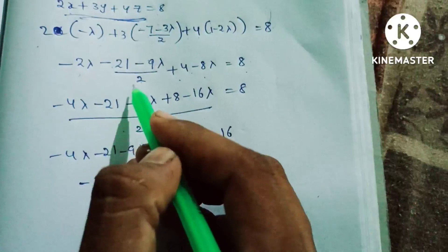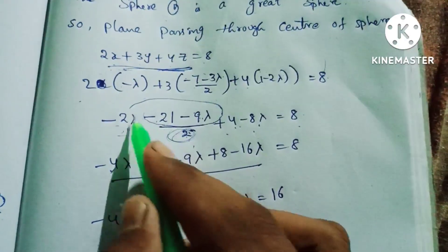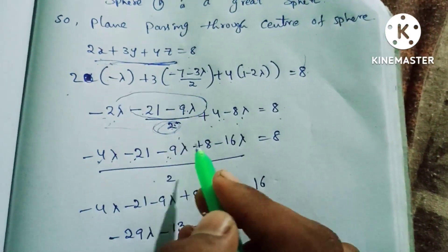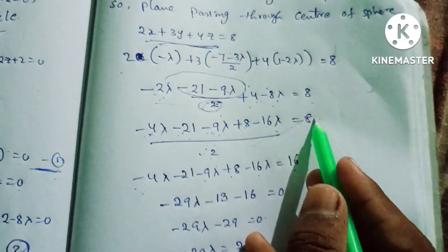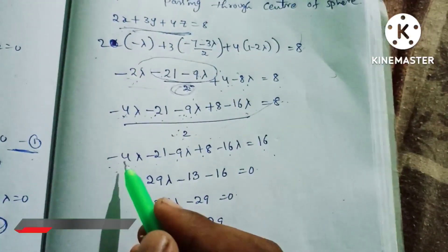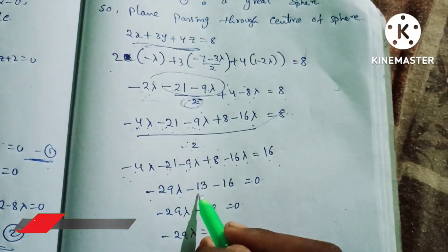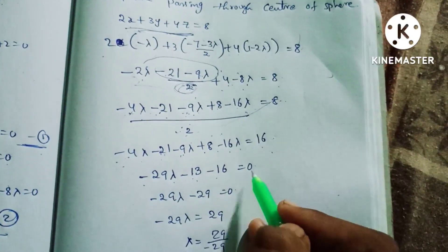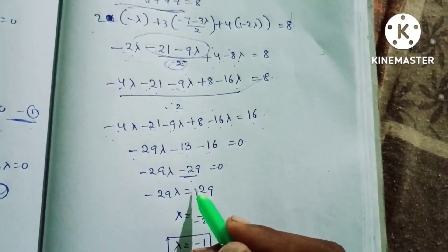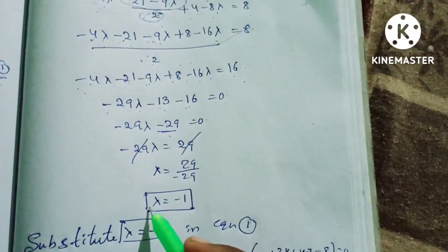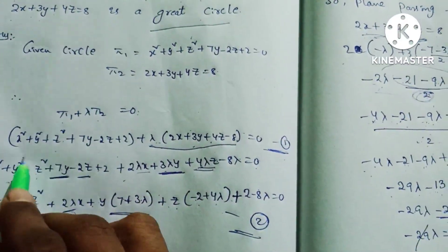Expanding: -4λ - 21 - 9λ/2 + 8 - 16λ = 8. Collecting lambda terms: -4λ - 9λ - 16λ = -29λ. And constants: -21 + 8 = -13, plus 16 = -13 + 16 = ... giving -29λ + 29 = 0, so -29λ = -29, therefore λ = -1.